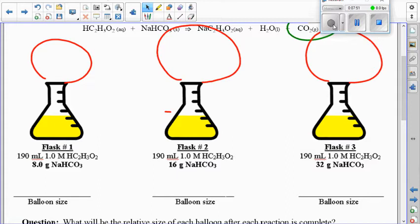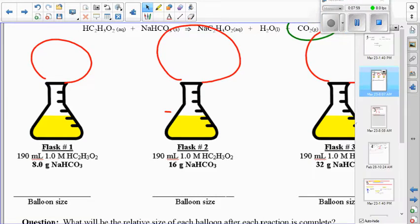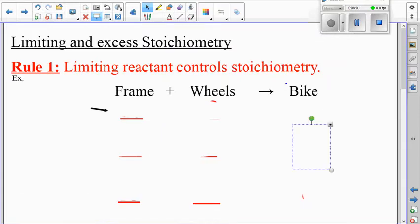This is the heart and soul of limiting and excess stoichiometry. By the end of the period today, I'm hoping that you should be able to explain this using chemistry. Flip to the back of that page, let's talk about bikes. And here's rule number one: the limiting reactant controls the stoichiometry.